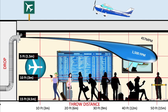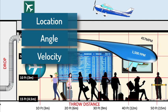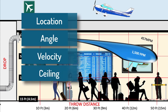What we learned here is that the throw distance is affected by many factors including location, angle of throw, velocity, and whether there is a ceiling.